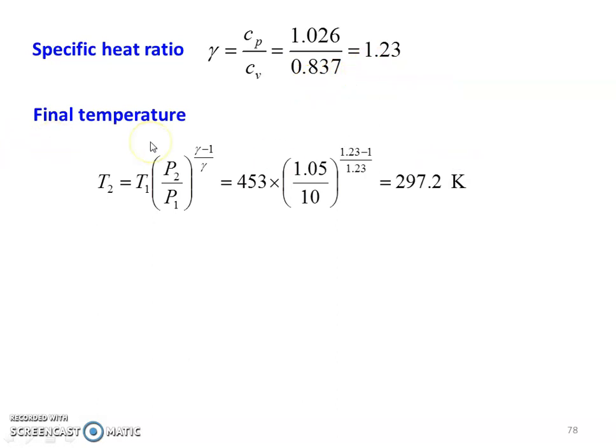Final temperature for the process: T2 equal to T1 into P2 by P1 to the power gamma minus 1 by gamma. So 453 into 1.05 divided by 10 to the power 1.23 minus 1 divided by 1.23 equal to 297.2 Kelvin. For the adiabatic process, final temperature.